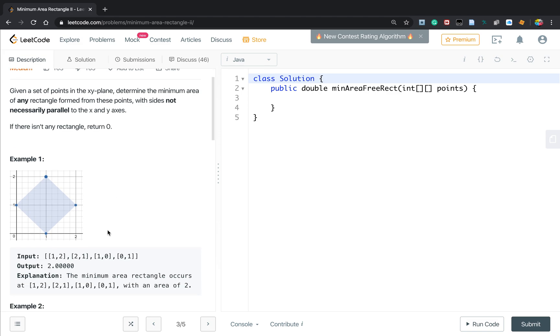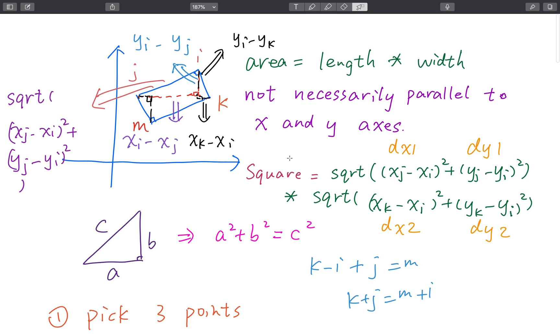So the difficulty is that these rectangles do not necessarily parallel to X and Y axis, so it may be difficult for us to calculate the area. Let's see. Let's first recall how to calculate the area of a rectangle - we just use the length times width. So this problem, we need to check whether there are four points they can form a rectangle.